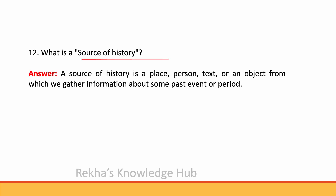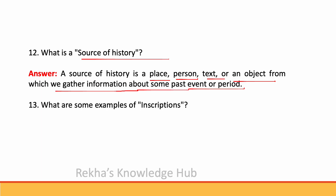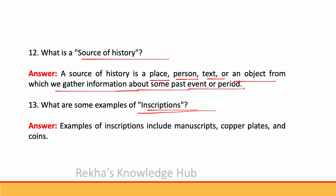A source of history is a place, person, text or an object from which we gather information about some past event or period. What are some examples of inscriptions? Examples of inscriptions include manuscripts, copper plates and coins.